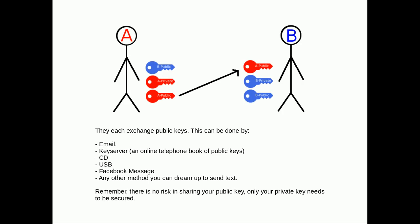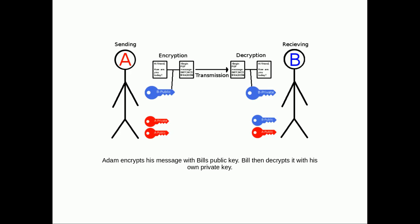Adam and Bill each exchange public keys. They've generated their key pair and given each other their public key. This can be done by any method you can possibly imagine. Remember, there's no risk in sharing your public key — it's meant to be shared. It's only the private key that needs to be secured.